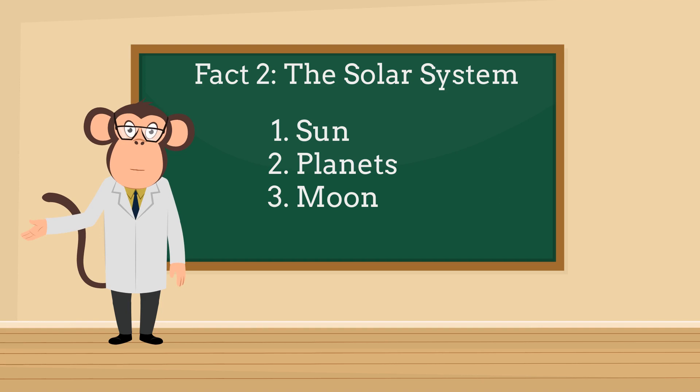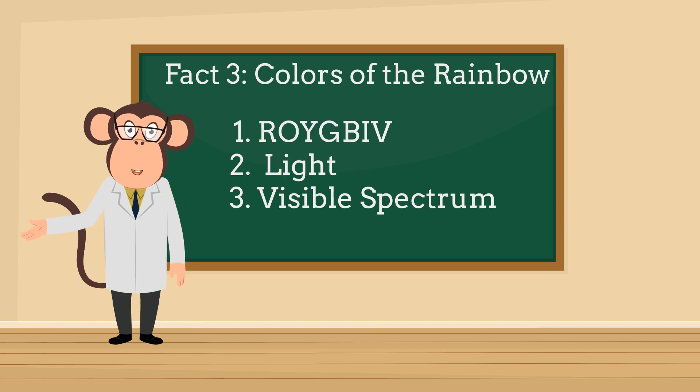Fact 2: The solar system. Our solar system is like a cosmic playground. Here's a sneak peek. Sun: The superstar at the center, giving us light and warmth. Planets: There are eight of them, including Earth, spinning and twirling around the sun. Moon: Earth's best friend, tagging along and lighting up our night sky.